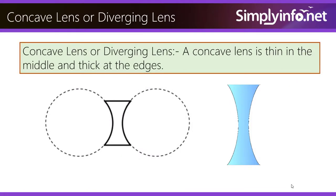Concave or Diverging Lenses. A concave lens is thin in the middle and thick at the edges.